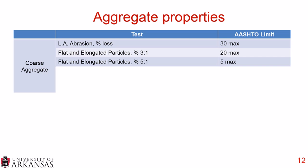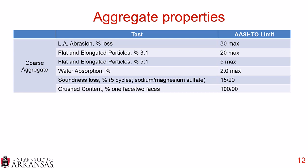Looking at aggregate properties from AASHTO M325, for coarse aggregate: LA abrasion is 30% maximum loss; flat and elongated particles at a 3-to-1 ratio is 20% maximum, and at 5-to-1 is 5% maximum. Water absorption is 2% maximum. For soundness loss, run on either sodium or magnesium sulfate, after 5 cycles you have a 15 or 20% loss respectively. For crushed content, 1-face is 100% and 2-face is 90%.